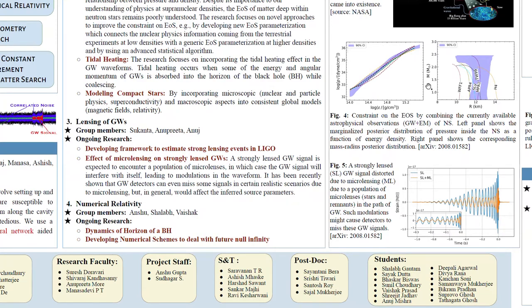The next area in which the group is working is numerical relativity and here I'm briefly writing two projects. The first is about dynamics of horizon of a black hole. For example if two black holes are colliding then initially they had two separate horizons and after the merger they have a single horizon. How does that dynamics happen and can we extract any information of that dynamics from the waveform that we are receiving from those merging binaries? That is a very interesting project.